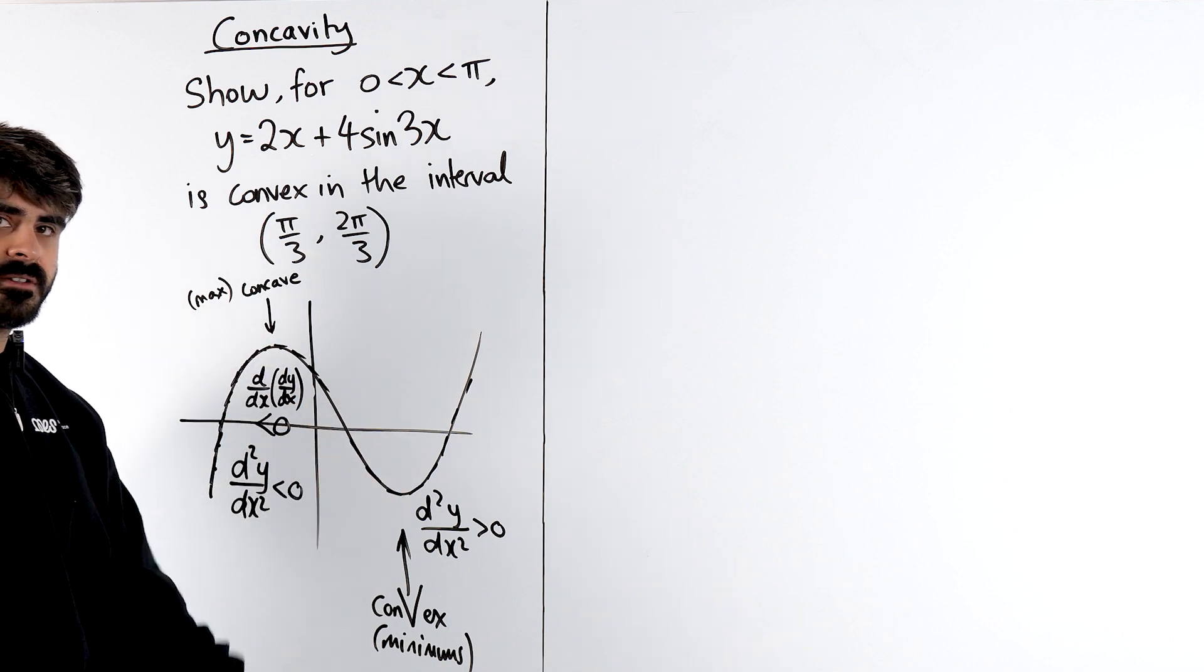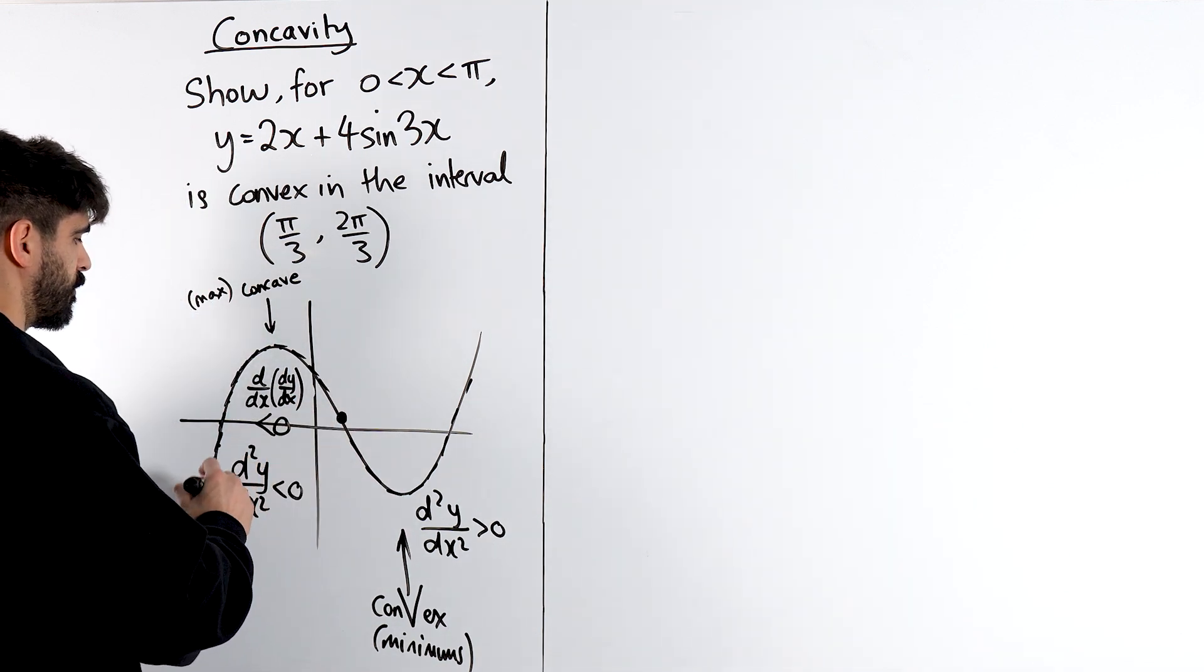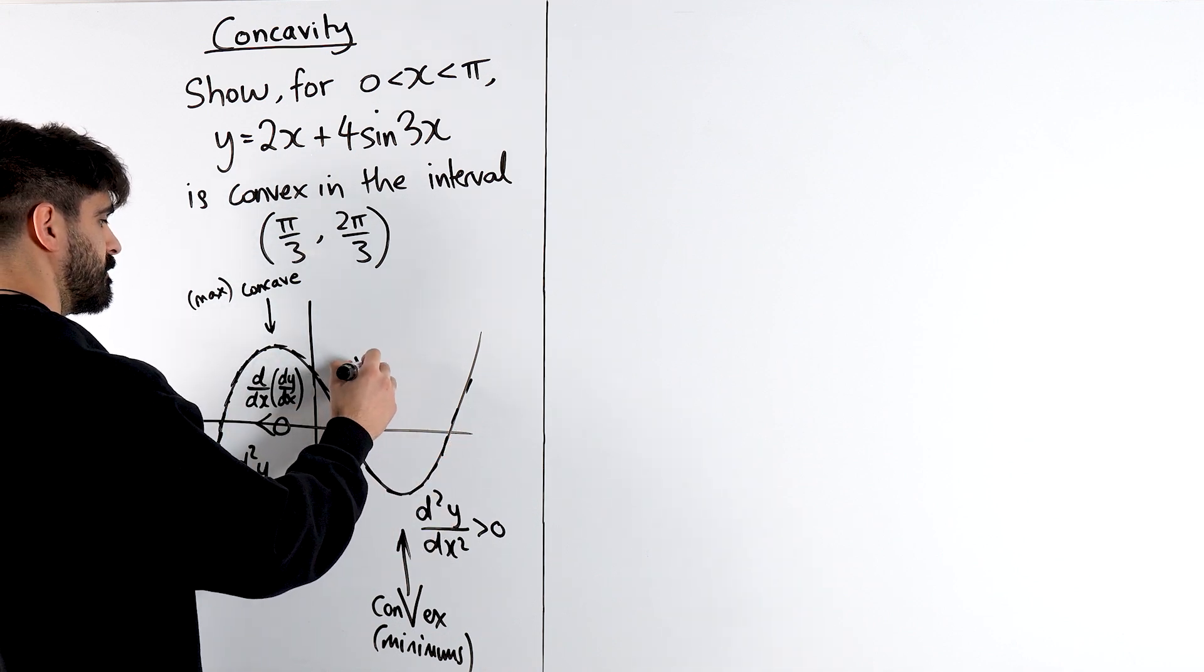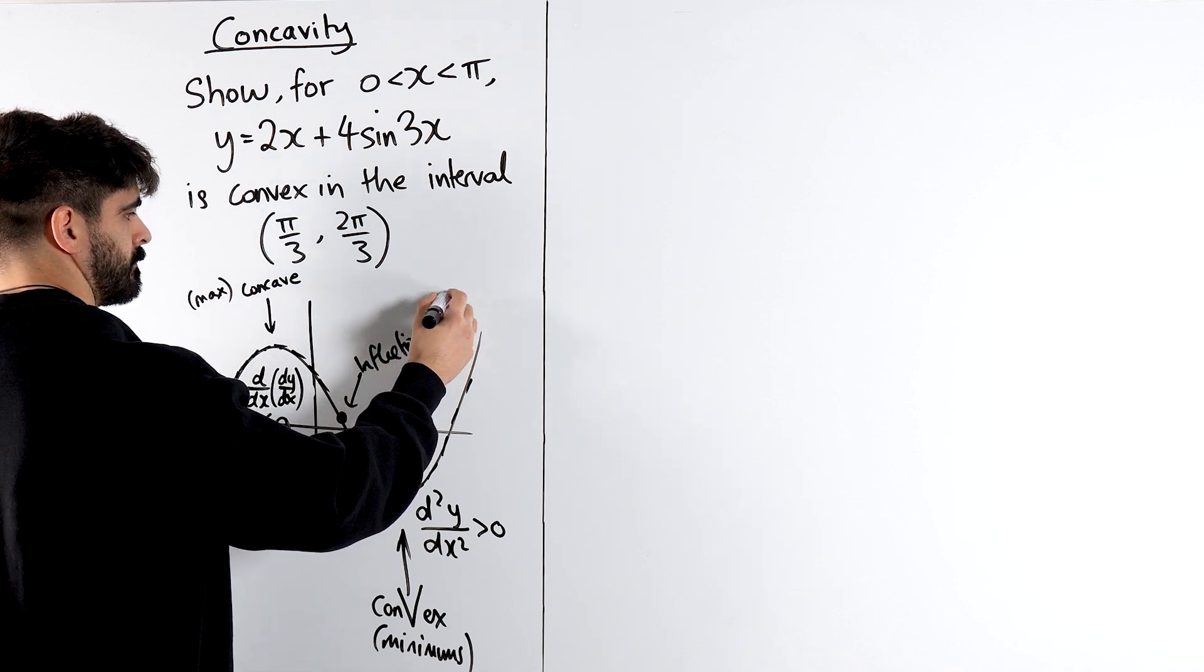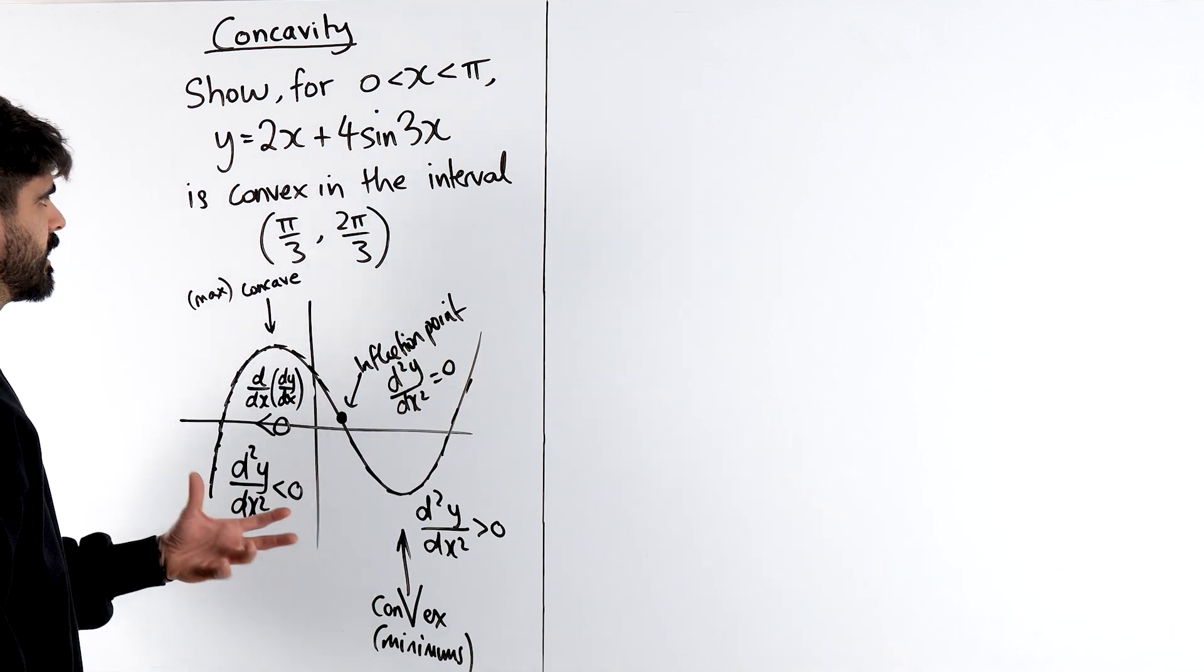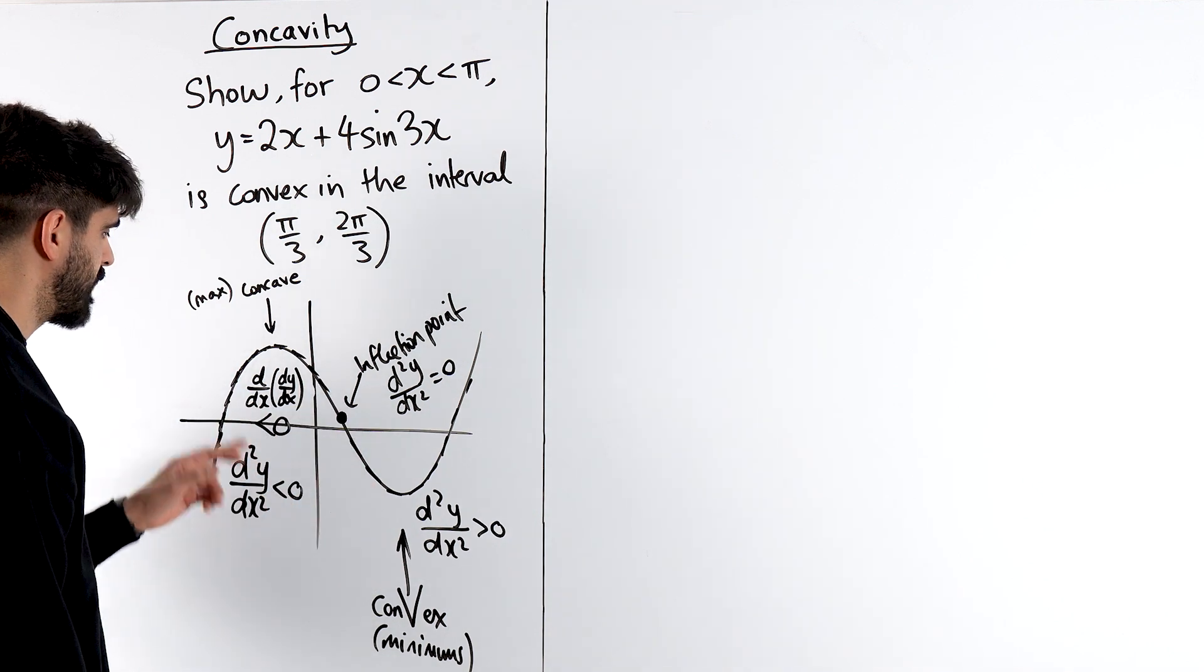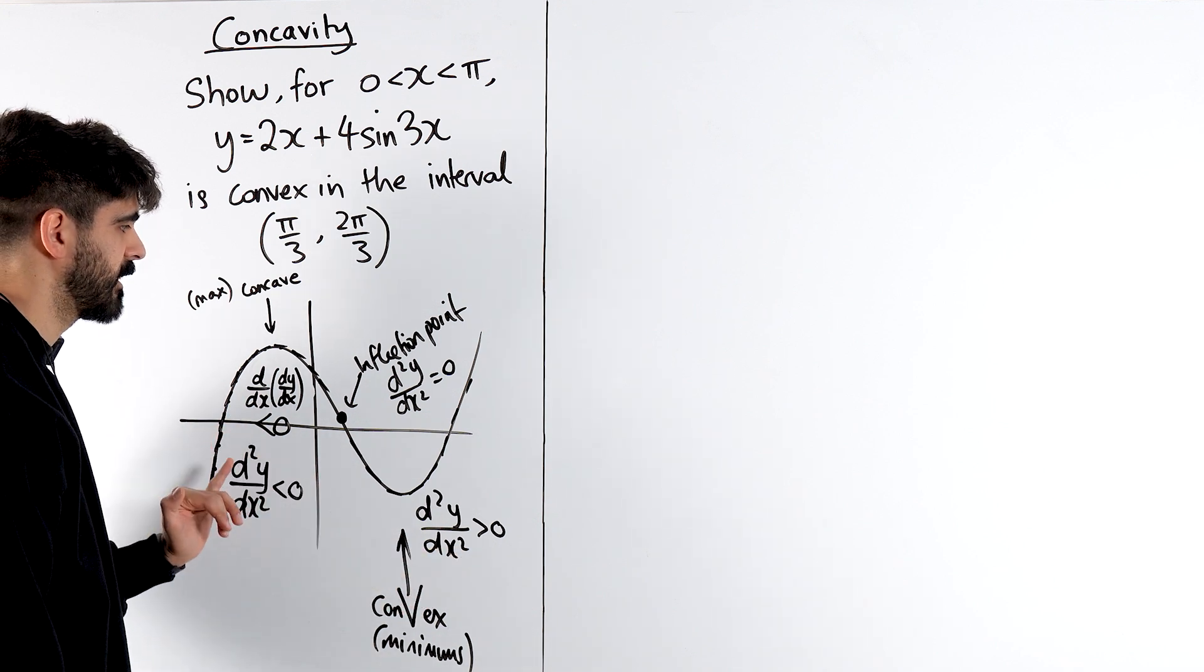Now, somewhere in between, something special happens. When we go from concave to convex, we have what's known as the inflection point, which is when the second derivative is zero. Which is why when we define something to be an inflection point, you have to show that it changes in concavity going from negative to positive or from positive to negative.